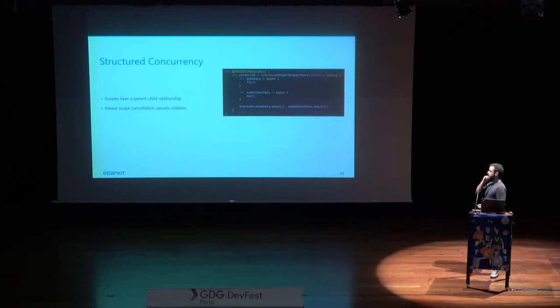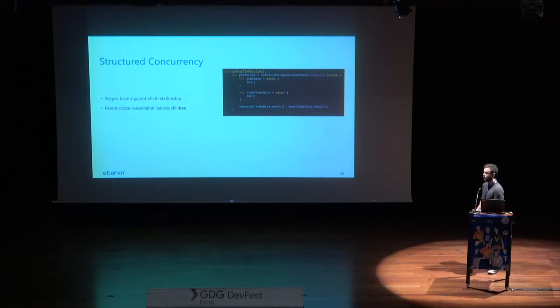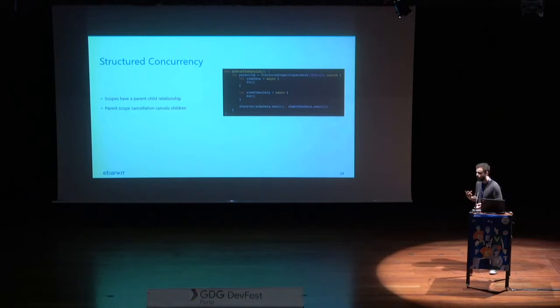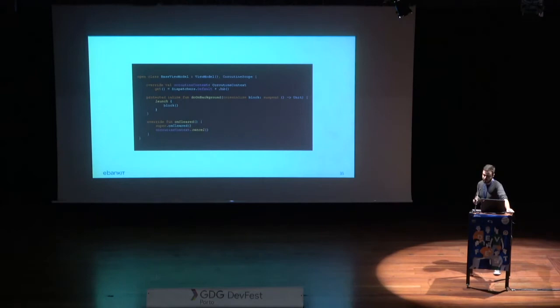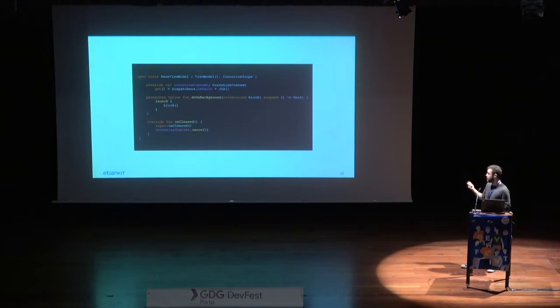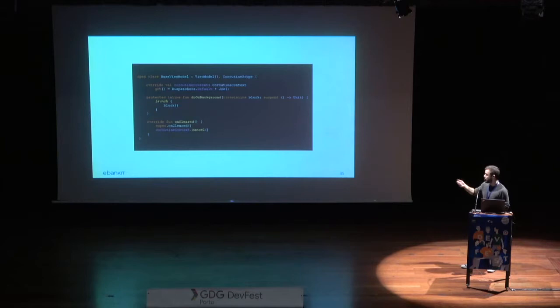Coroutines provide structured concurrency — when you launch a coroutine you can launch more coroutines inside it, and they will have a parent-child relationship. So if you cancel the parent job, it cancels everything it spawned. In an Android application this is really useful because we need to be aware of the UI lifecycle — when you leave a screen, you need to cancel all the tasks that were running. Here's an example using ViewModel: you extend the coroutine scope, define your context, and when the lifecycle event is fired you simply call cancel on your coroutine context, and all coroutines launched within it will be cancelled.